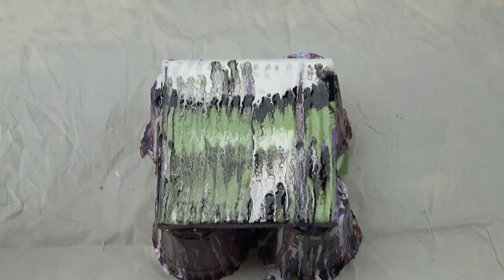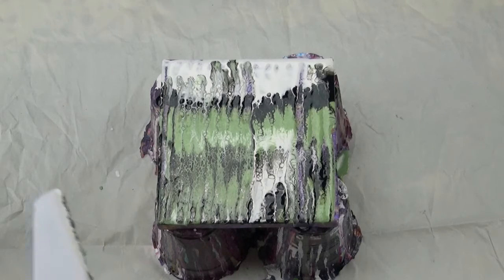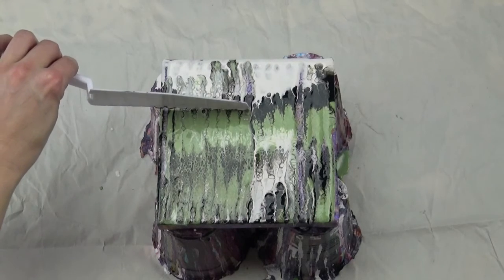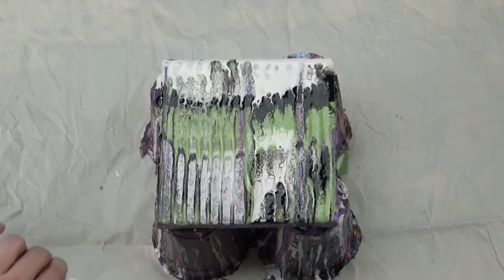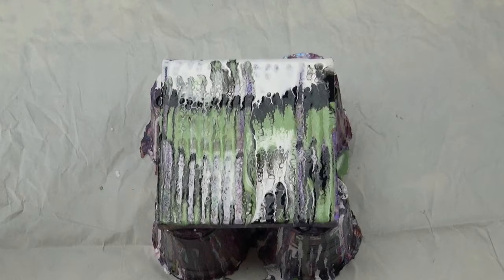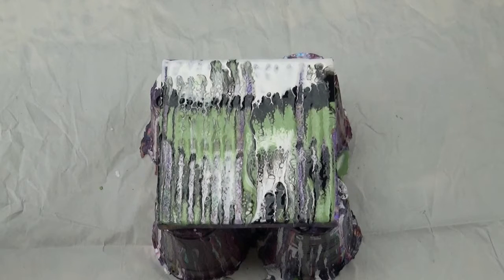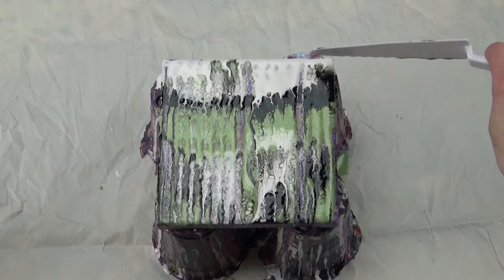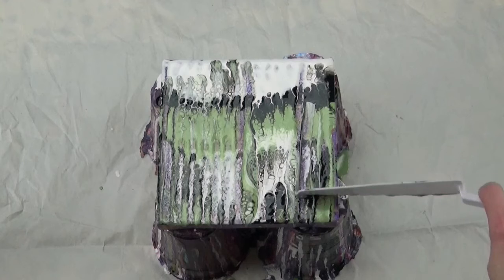Now I've started the swiping and you can see the really cool cells forming with the white and black. But I really want the purple from the original pour to show through, so I keep coming through and trying to drag that paint down.